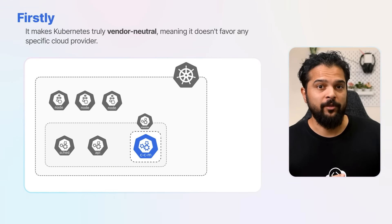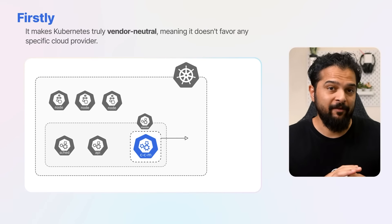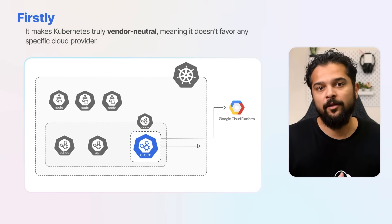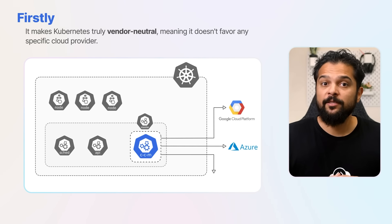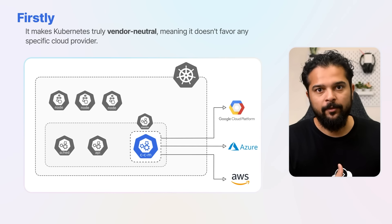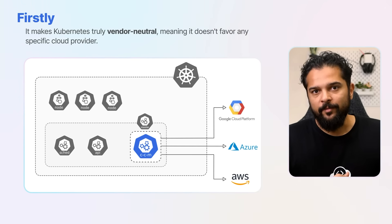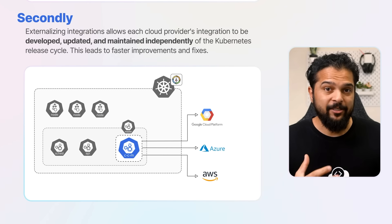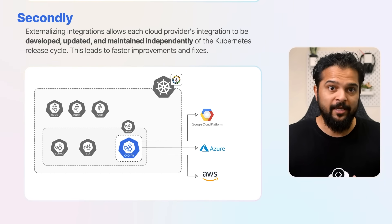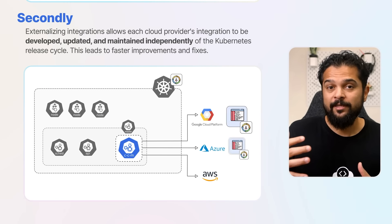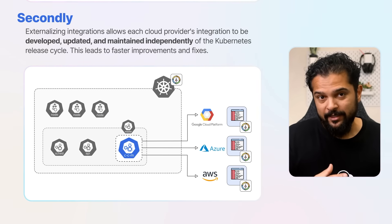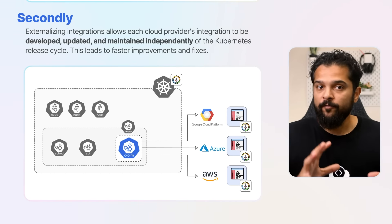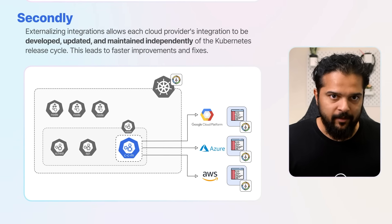There are several reasons for this change. First, it makes Kubernetes truly vendor neutral, meaning it doesn't favor any specific cloud provider. This makes Kubernetes more versatile and adaptable to different environments. Second, externalizing integrations allows each cloud provider's integration to be developed, updated, and maintained independently of the Kubernetes release cycle.